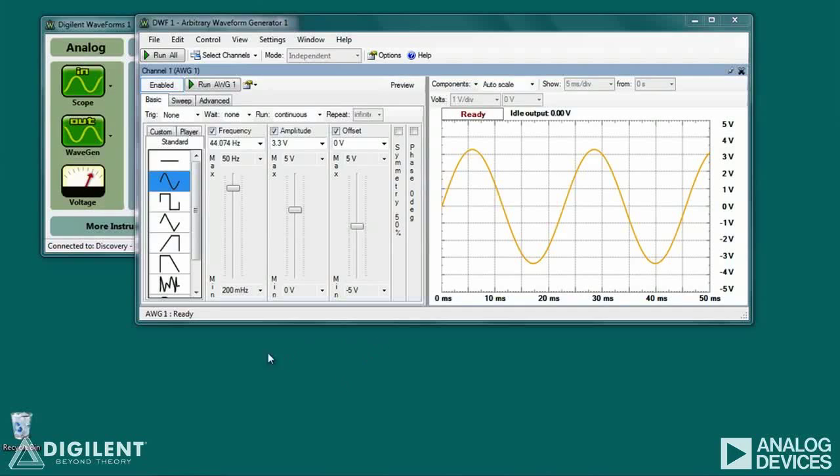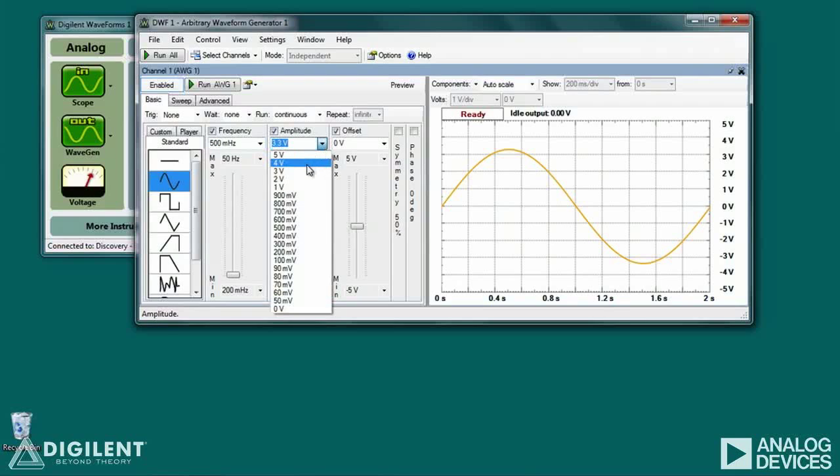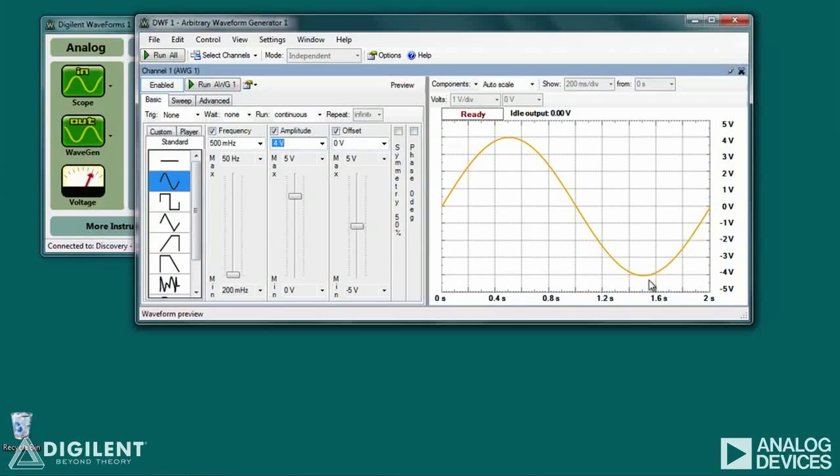Let's apply a sine wave to the LED. To create our signal, select the Standard tab and click on the icon that looks like a sine wave. Set the frequency to, say, 500 millihertz and the amplitude to 4 volts. We'll leave the offset at 0 volts so that the signal alternates between positive 4 volts and negative 4 volts. The LED, of course, will only turn on when the wave is at a high voltage, so we should see the LED turn on at a rate of about once every 2 seconds.